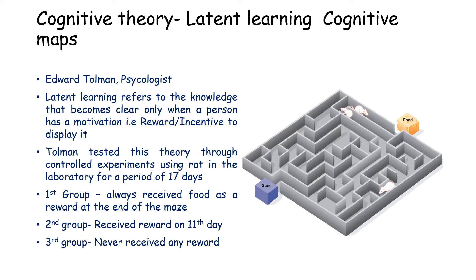Tolman concluded that learning can take place without any reinforcement, but the result of learning becomes more evident only after the individual is motivated. Both types of cognitive theories — learning by insight and latent learning — are very essential in an organization, as employees undergo mental processes of thinking, problem solving, interpreting, and understanding to solve workplace problems.